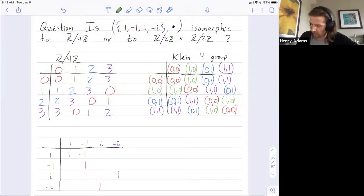Where are the negative 1s in this table? Well, negative 1 times 1 is negative 1. And then i squared is negative 1 by definition. And negative i squared, well the negatives cancel and then I just get i squared, which is negative 1.